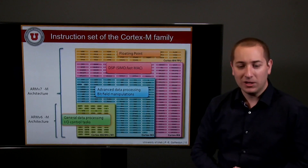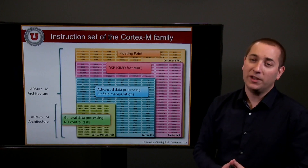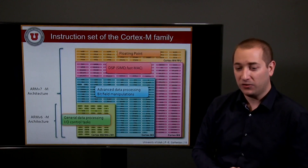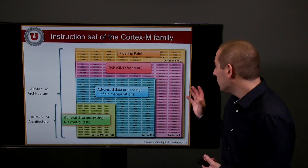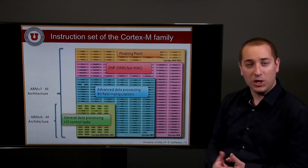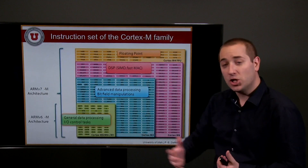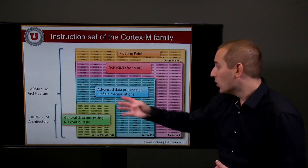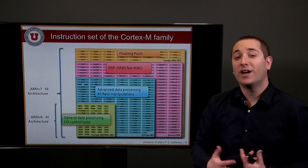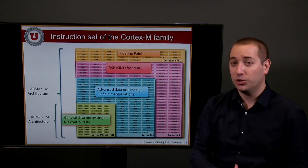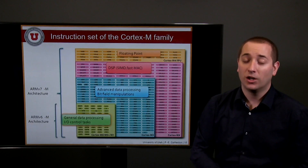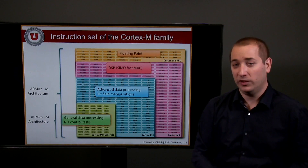In the Cortex-M0 and M1 family, you find general data processing as well as I/O control tasks supported by the ISA. As you move from M0 and M1 to M3, M4, and M4 with FPU, you simply enrich your instruction set architecture with advanced data processing, DSP operations, and floating-point operations. That provides additional performance and capability on your system, yet with a more complex core, more energy consumption, and of course, a more costly processor.